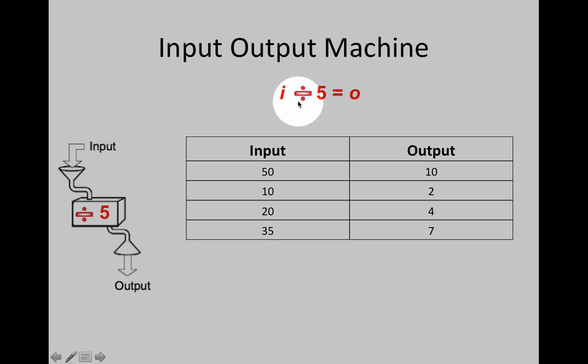Check your answer. The input divided by 5 equals the output. Does this work every time? 50 divided by 5 equals 10. That's correct. 10 divided by 5 equals 2. 20 divided by 5 equals 4. 35 divided by 5 equals 7. It works every time.